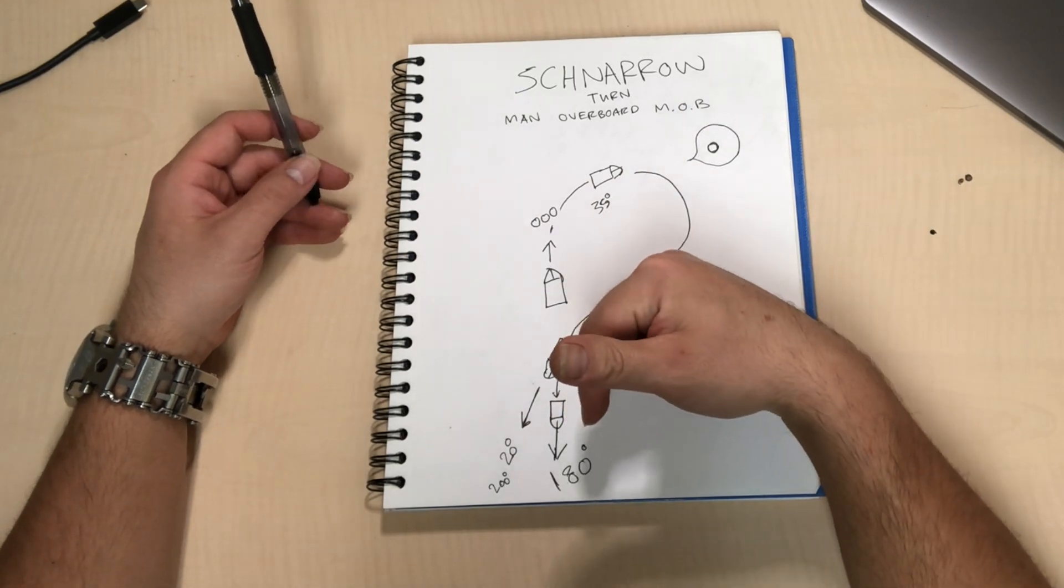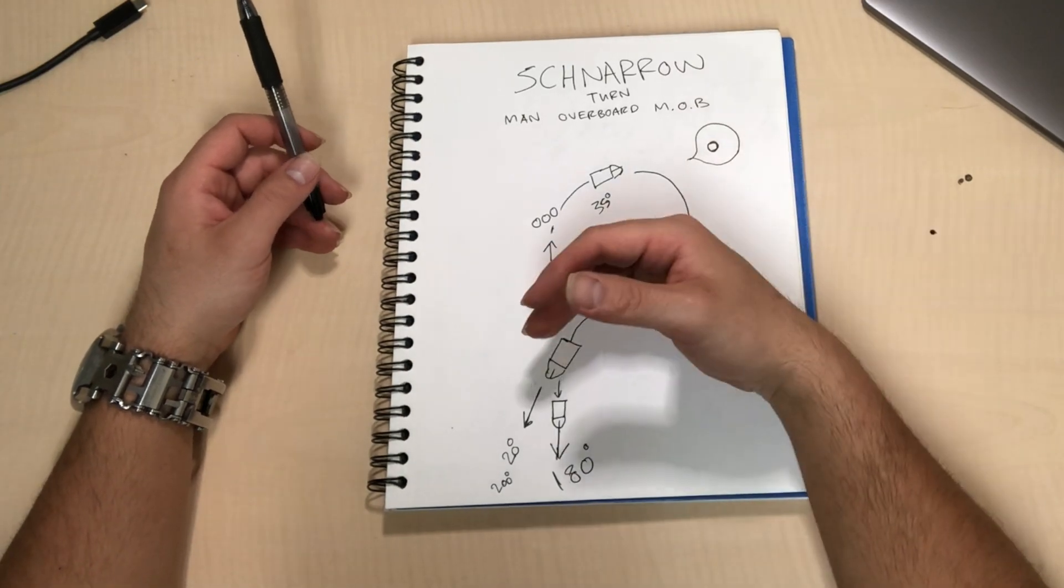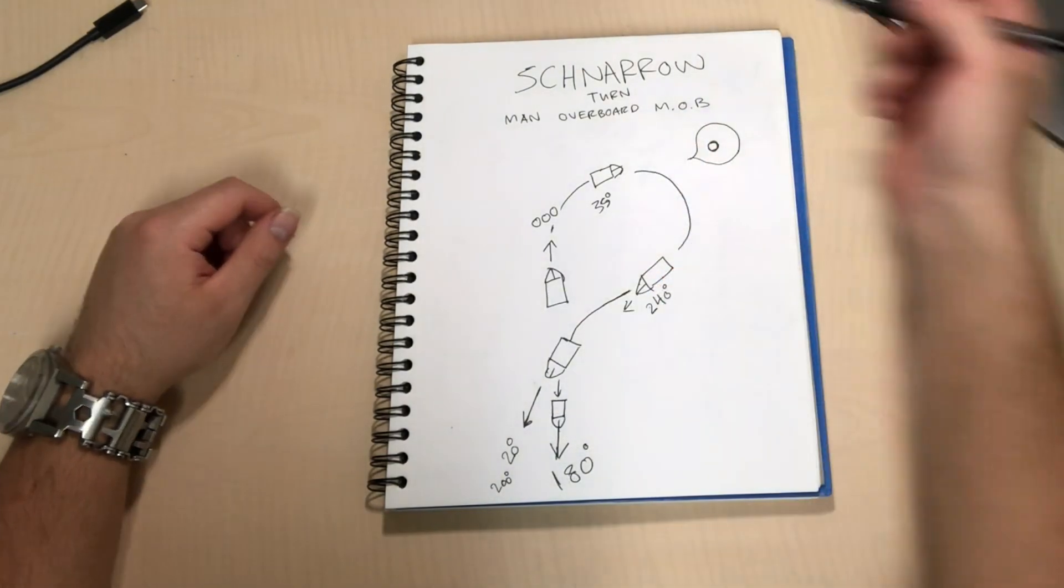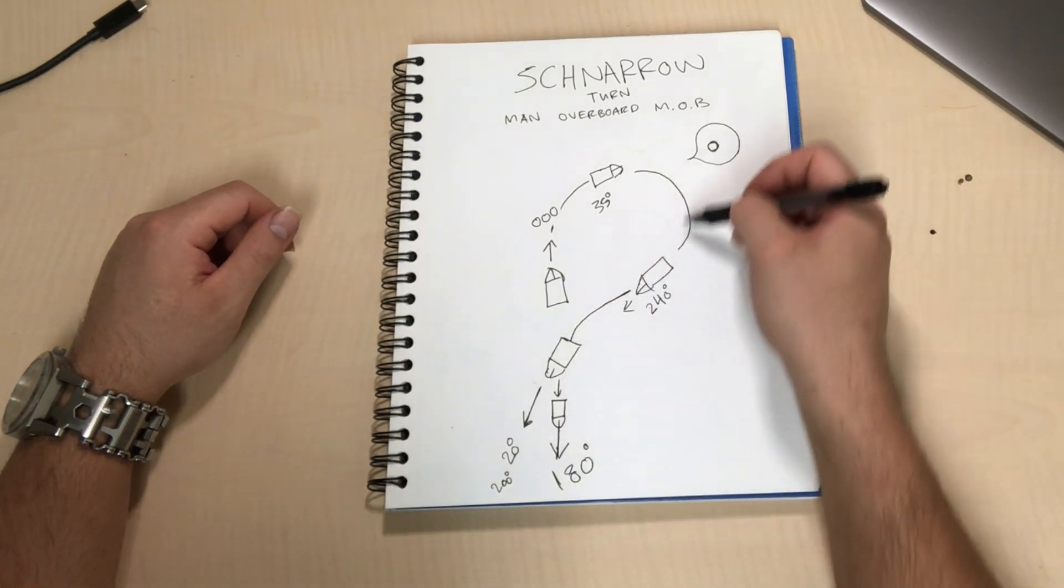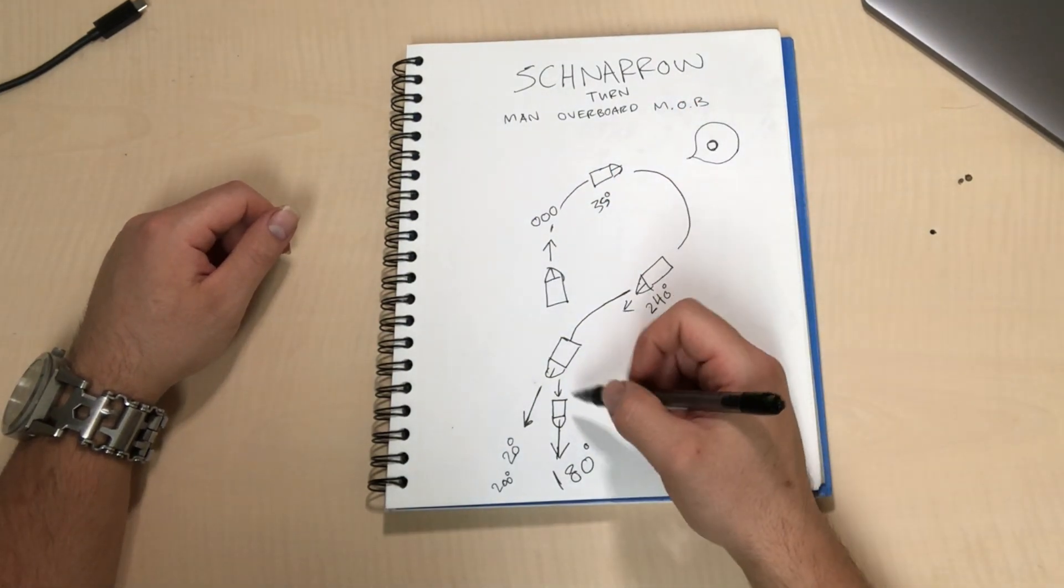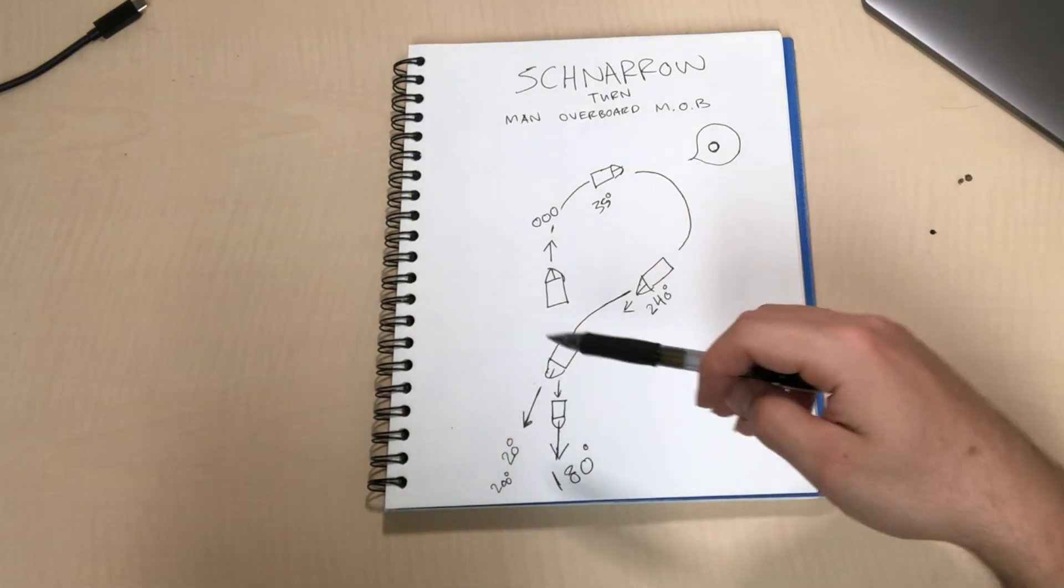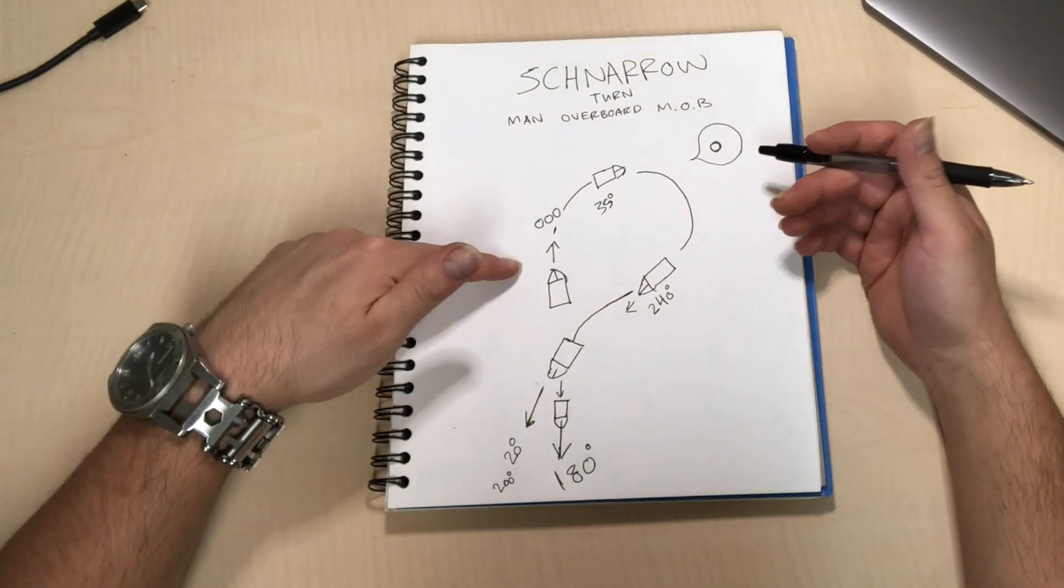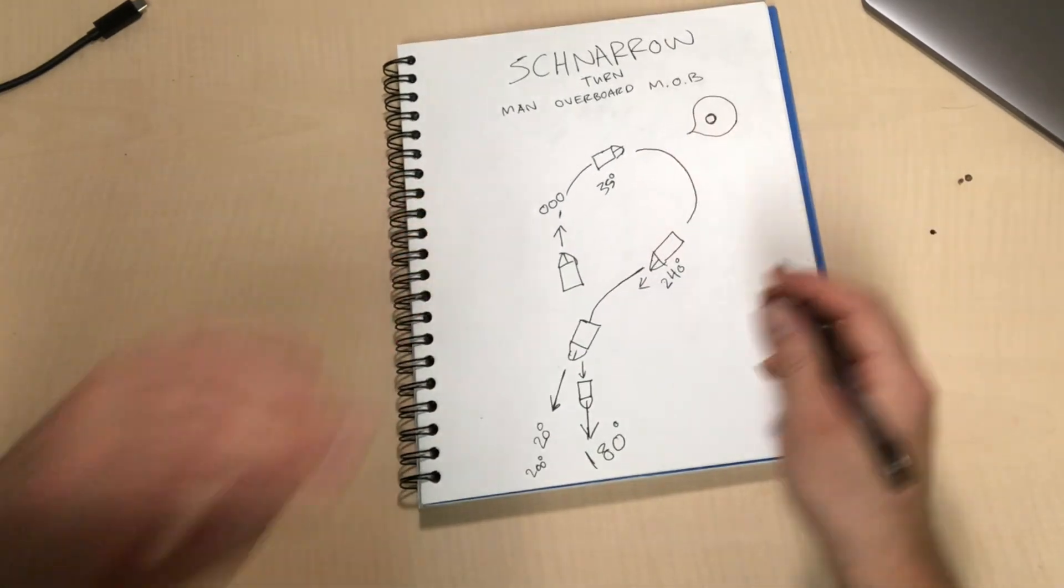Like almost to a dead stop to where I think I used about five degrees of the opposite rudder just to make sure I stopped. But yeah, that is the Scharnow turn. It's basically the opposite of the Williamson turn, which is you'll be going this way and you'll do hard right over and then hard left over to come back the other way.